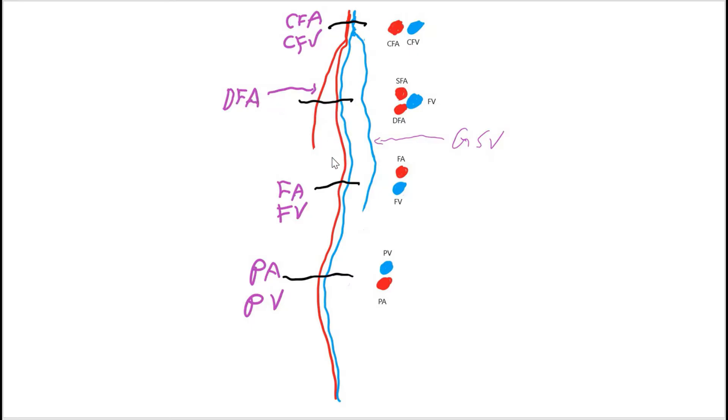And keep going down, it becomes the femoral artery and the femoral vein. And when it passes through the adductor canal behind the knee, it becomes the popliteal artery and the popliteal vein. The common femoral vein bifurcates into great saphenous vein.